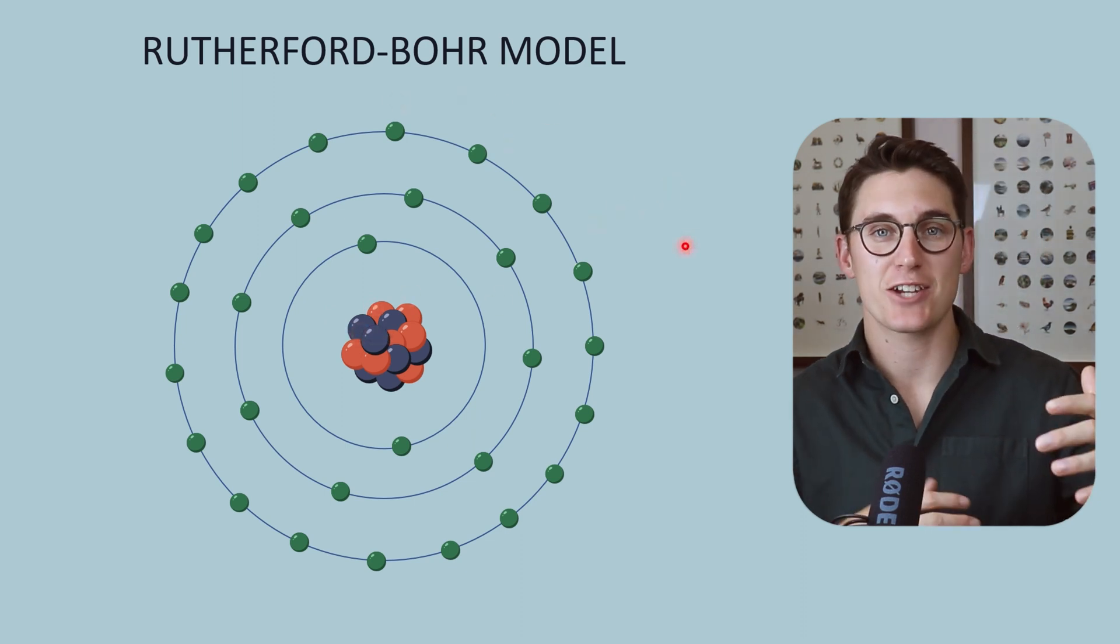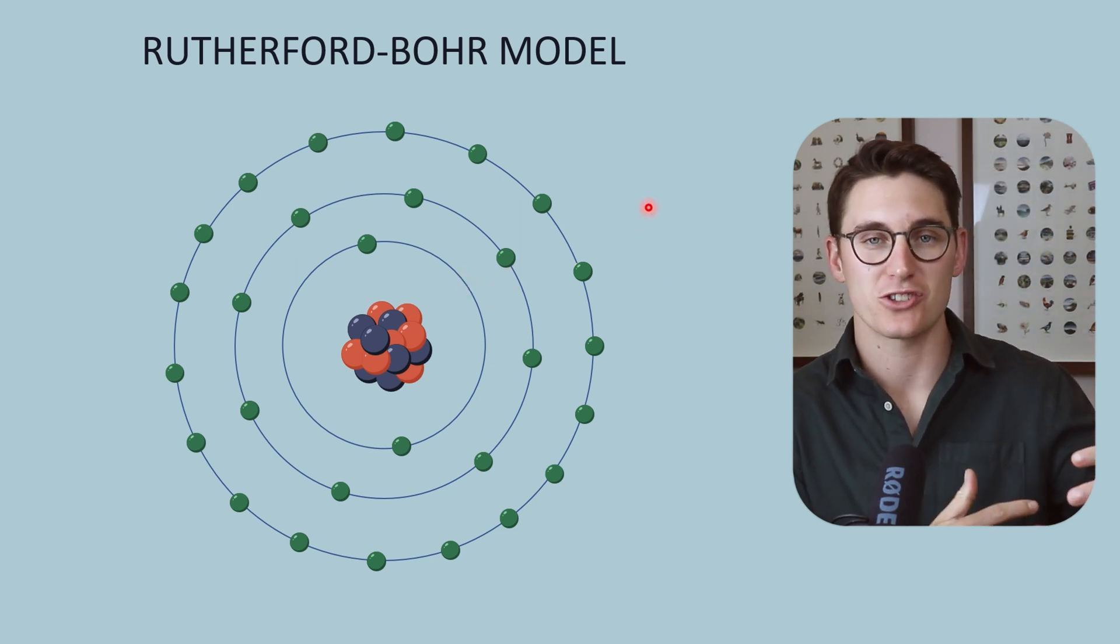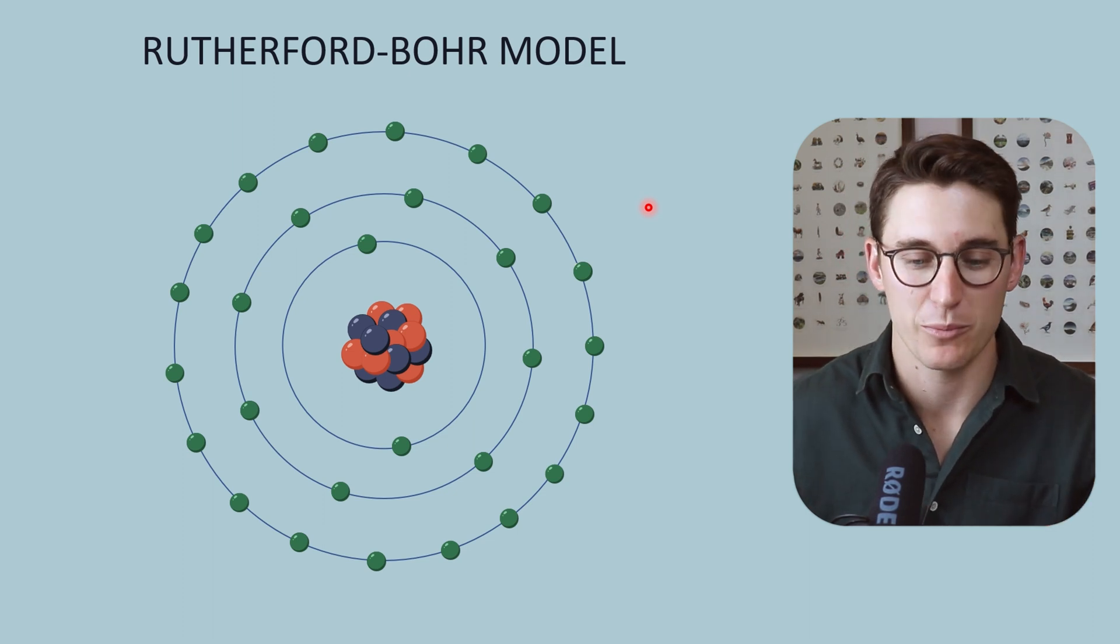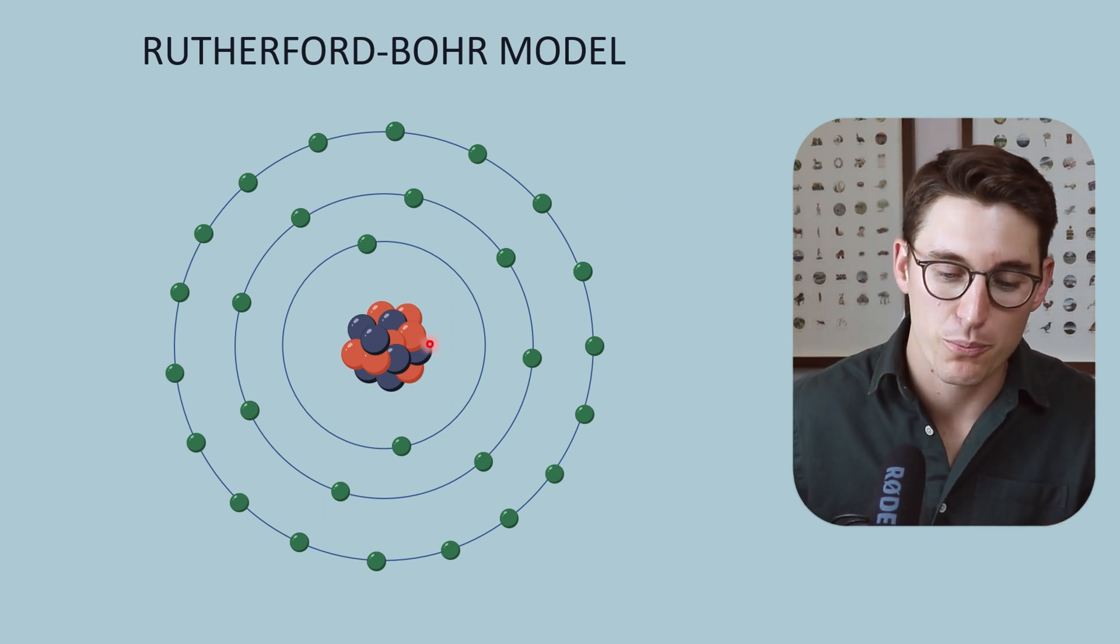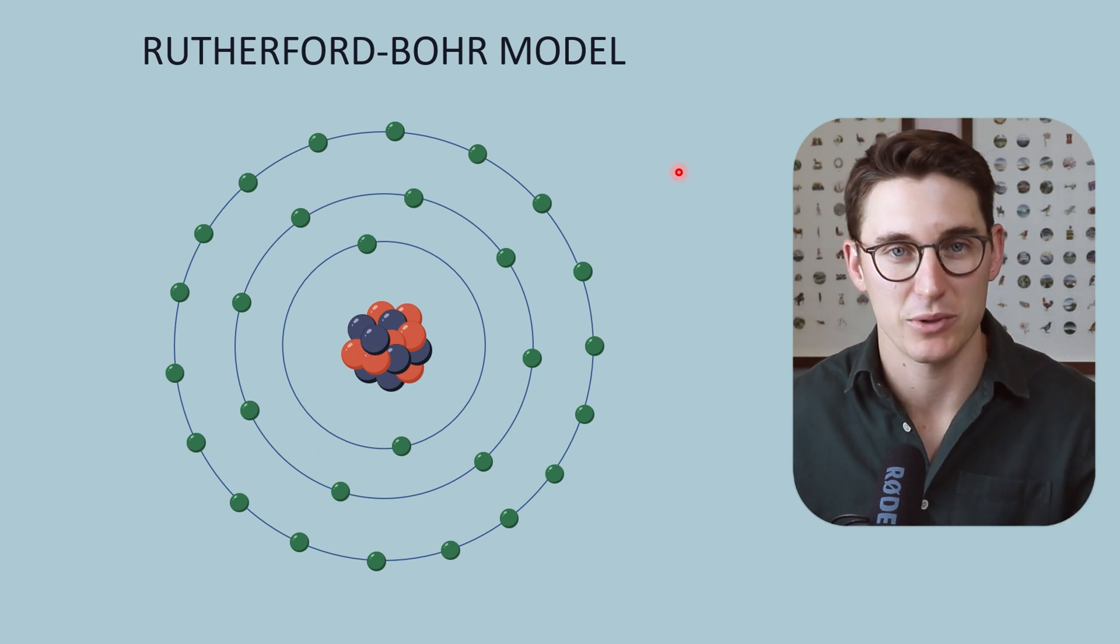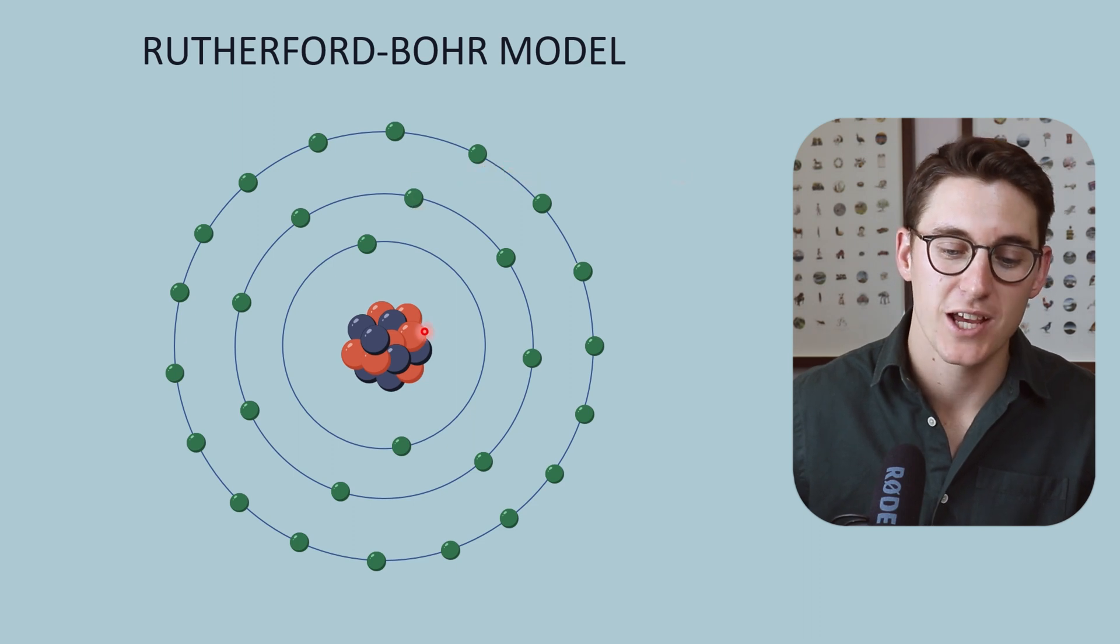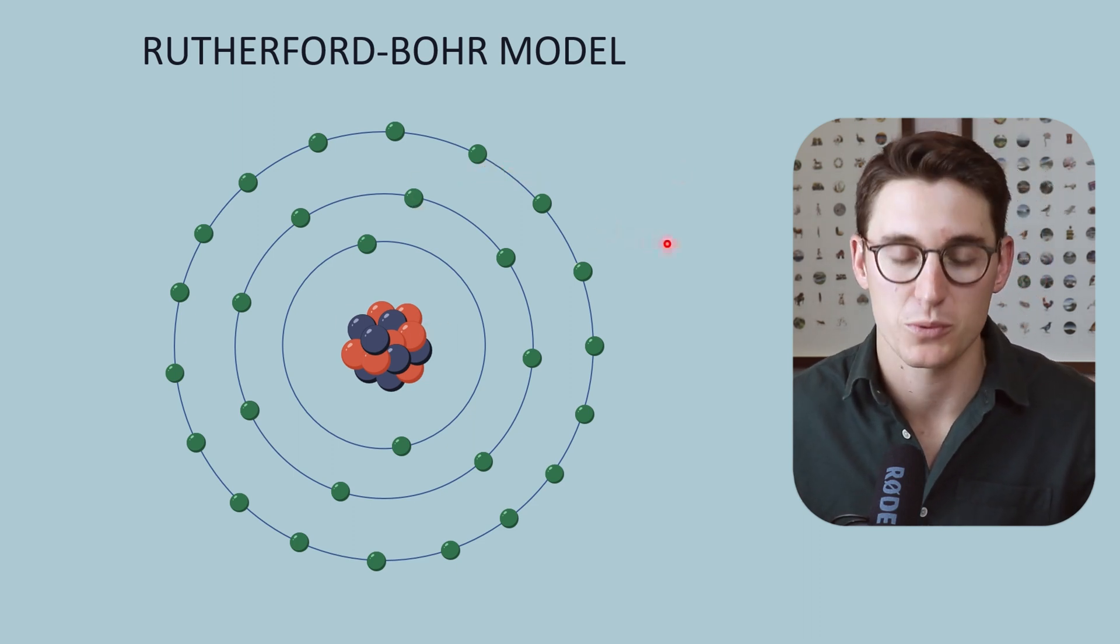Bohr discovered that these electrons exist in what's known as energy shells or electron shells, and the energy of those shells are specific for each element. The number of protons within the nucleus defines that element. In an uncharged atom, the number of electrons will equal the number of protons within the nucleus.